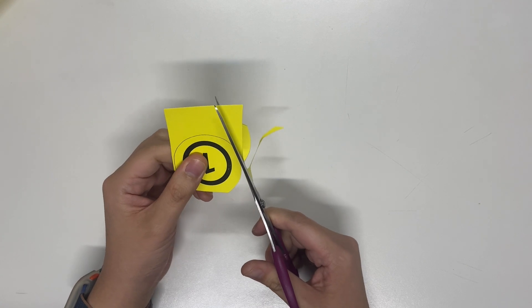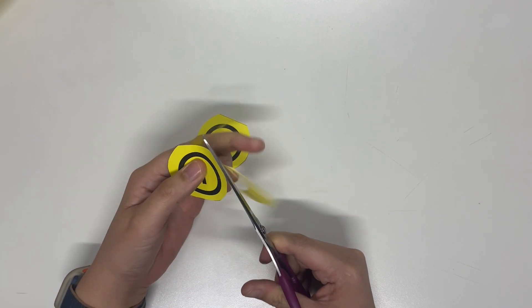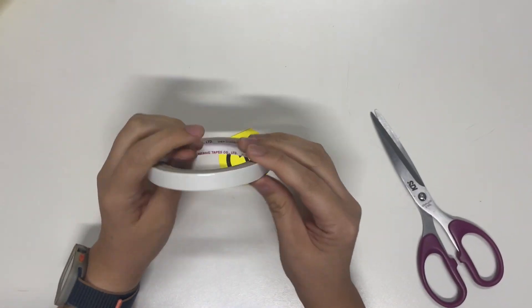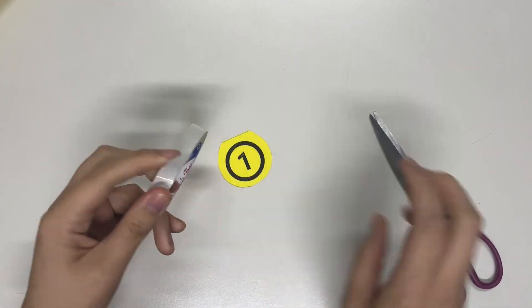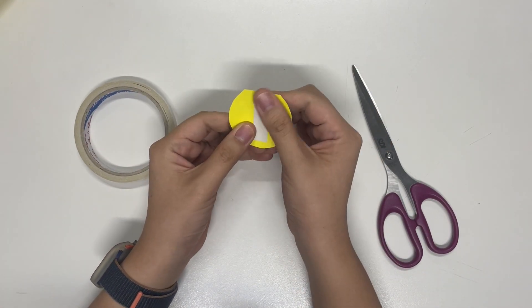First let's grab our number one templates and just cut. After cutting, get double-sided tape and place one strip at the back of each circular template.